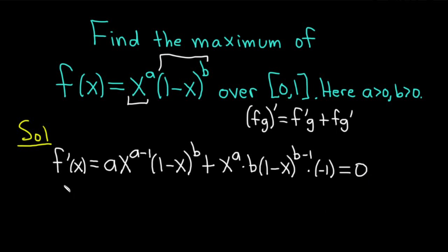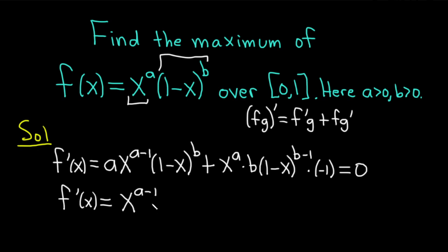Now, f prime of x — at this point we're going to factor. Let's factor out the terms with the smallest exponents. We have x^(a-1) and x^a, so we factor out x^(a-1) since it has the smaller exponent. We also have (1 minus x)^b and (1 minus x)^(b-1), so we pull out (1 minus x)^(b-1) since b minus 1 is smaller than b.